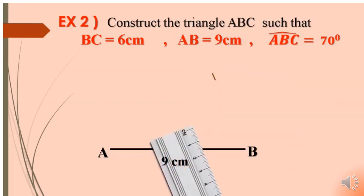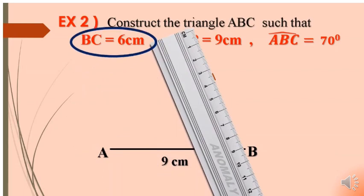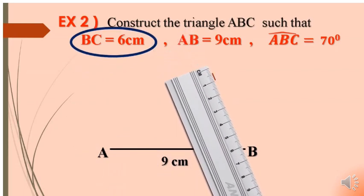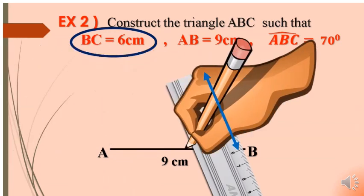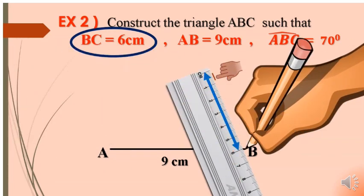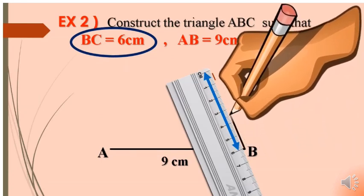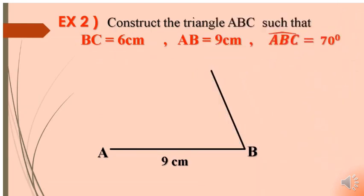Then, using the ruler, we draw the third side which is BC equal to 6 cm. Put the 0 to 6 cm from B. So, we draw side BC equal to 6 cm and passing through the marked line.